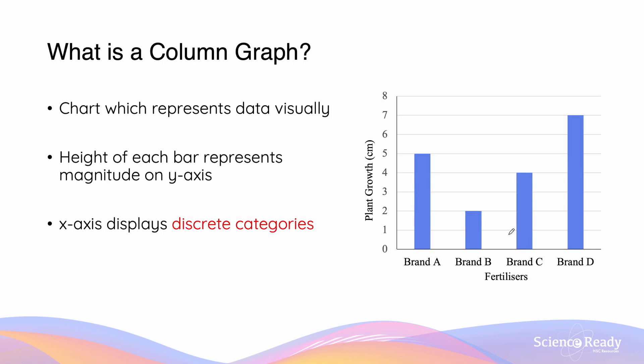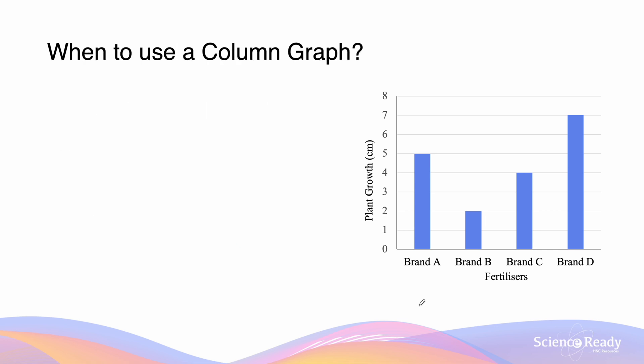So what is a column graph? A column graph, which is a vertical bar graph, is likely the most common type of graph you'll come across. In column graphs, the height of each bar is going to represent the magnitude on the y-axis, while the x-axis is going to display discrete categories. Because of this format, it makes column graphs ideal for comparing between categories in groups.